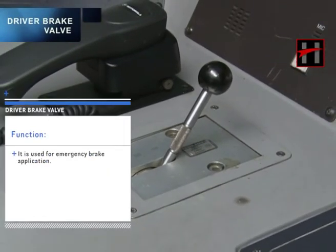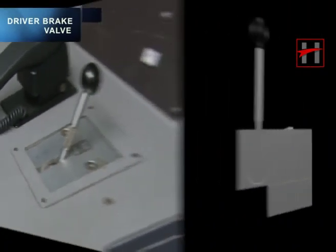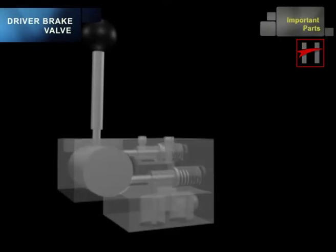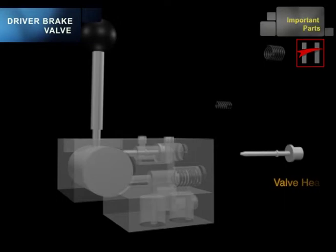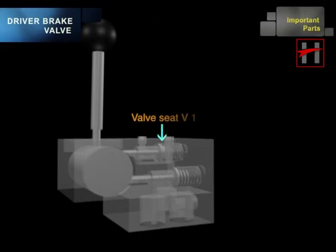The driver brake valve is used for emergency brake application. The important parts of the driver brake valve are the valve housing, control shaft, tappet, compression spring, valve head, dowel pin, valve seat V1, and valve seat V2.